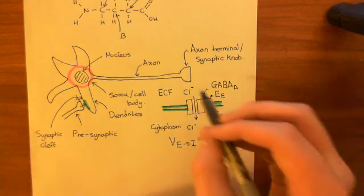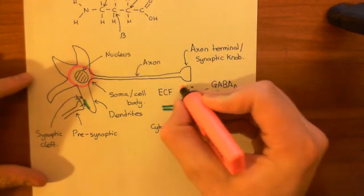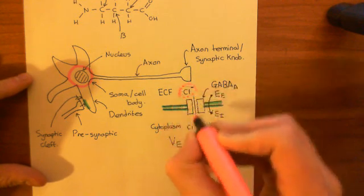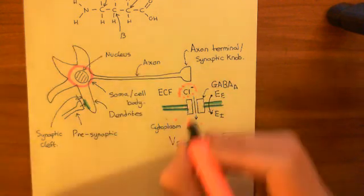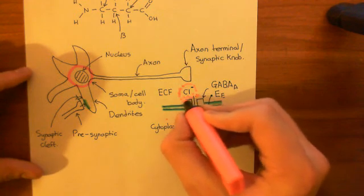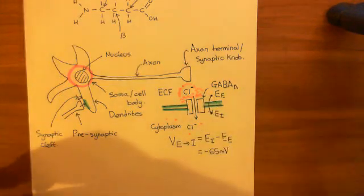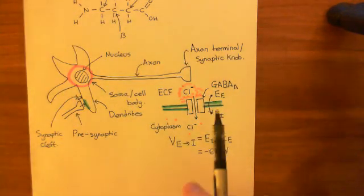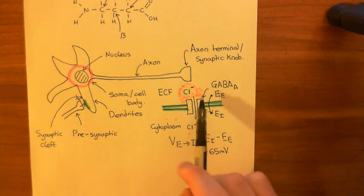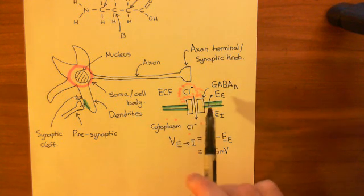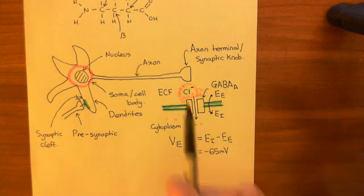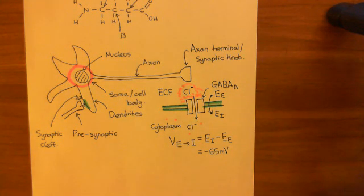The concentration of chloride anions in the extracellular fluid is far higher than in the intracellular fluid. This favours movement of chloride anions into the cell, whilst the electrical potential gradient favours them remaining extracellularly. However, the concentration gradient is greater than this electrical gradient, so you still get a net movement of chloride anions into the cell when you open these GABA-A receptors, even when you factor in the electrical potential difference.